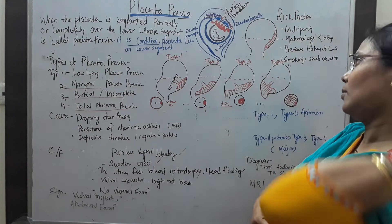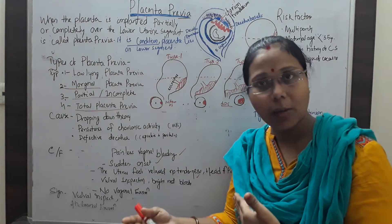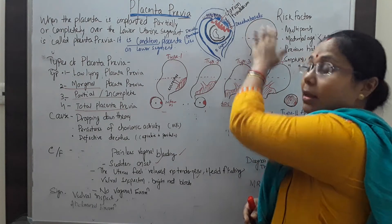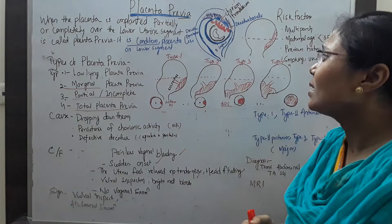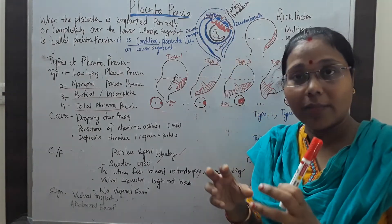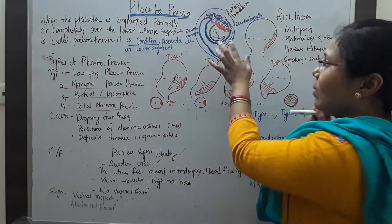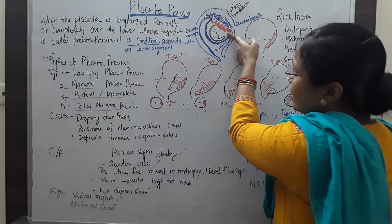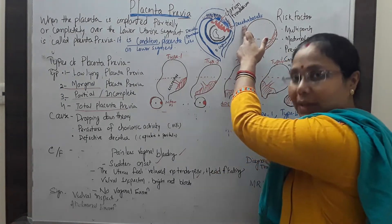At the implantation site, there are two components that form the placenta: the maternal component and the fetal component. The maternal component is called the decidua basalis, and the fetal part is called the chorion frondosum. The chorion frondosum forms villi-like structures — primary villi, secondary villi, and tertiary villi — which invade the bed of the endometrium, called the decidua basalis.